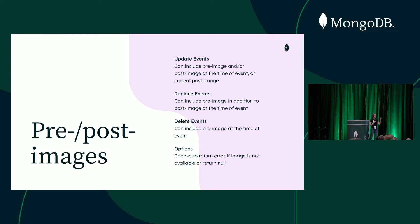For the options, you can specify 'required' meaning you want to receive an error if the image is not available, or 'when available' meaning it's optional and may be null if not there. If you specify required and receive an error, it's not transient — you don't need to retry. The error means the image is not available because you didn't enable it on the collection, it got purged, or there was an election and not enough oplog. Basically, there is no image.